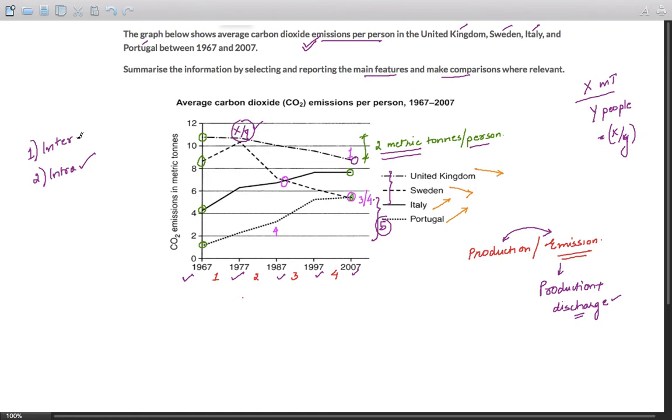You also have to look at the inter picture. That is comparison between different groups. So for that, it's extremely important that you mention which is the highest. United Kingdom, and throughout the given duration, it stayed the highest emitter of per person carbon dioxide emissions.